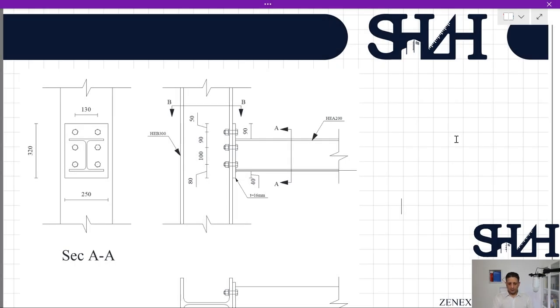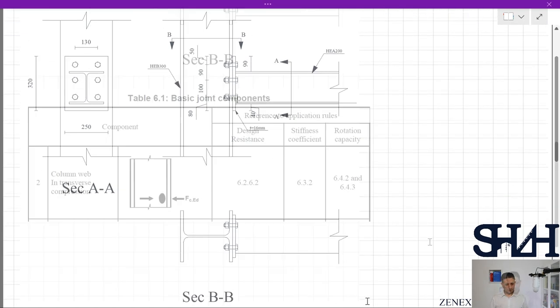The question is the rigid connection between HEA 200 as a beam and HEB 300 as column, connected with an end plate with width of 250 millimeters, 320 millimeter height, and 16 millimeter thickness. We have six bolts for this connection, M20 class 8.8. All parts are steel S355. The next item for calculation comes from Table 6.1: column web in transverse compression. The design resistance is taken from Clause 6.2.6.2.